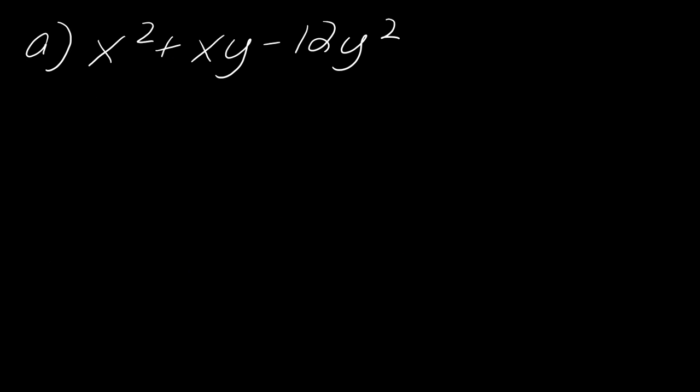So I just have a couple of examples of this in case you want a little more practice. So like in this example here, all I really want to think about are what two things would multiply to negative 12 but add to 1. So that would be 4 and negative 3. So I just want to tack a y onto those, and then that'll ensure that I get the right middle term and this negative 12y squared. So that's really it.